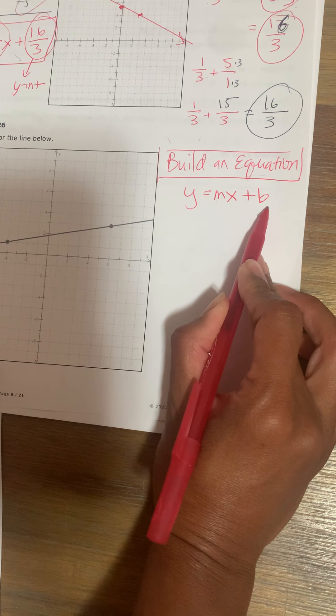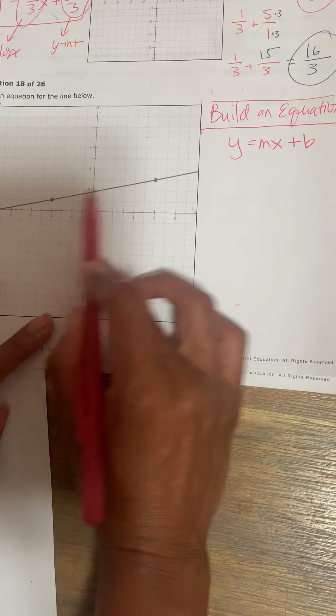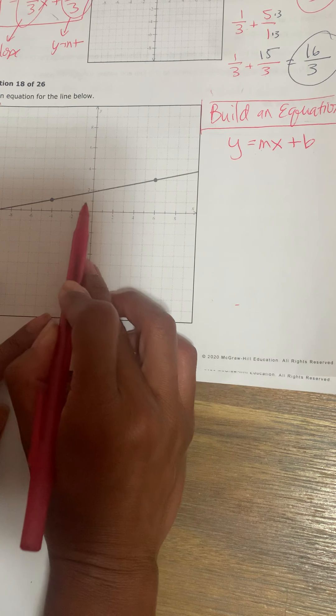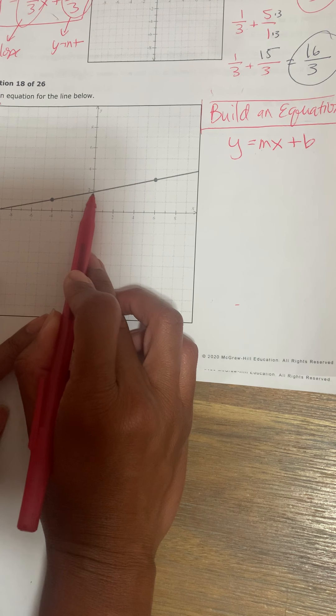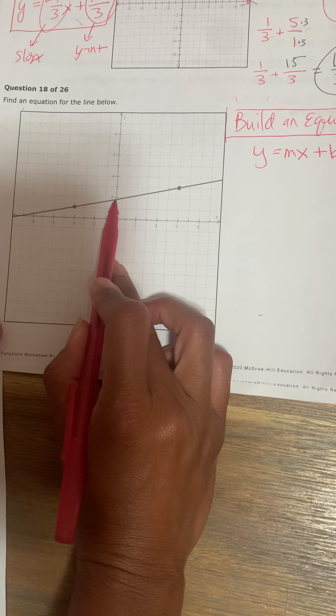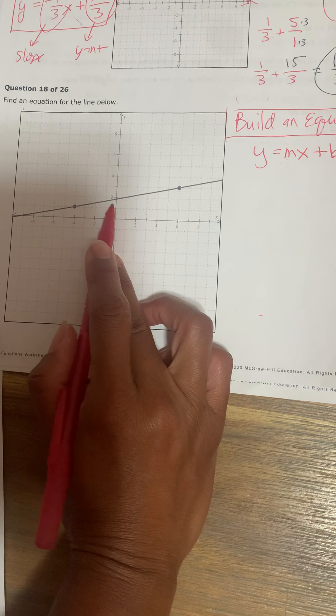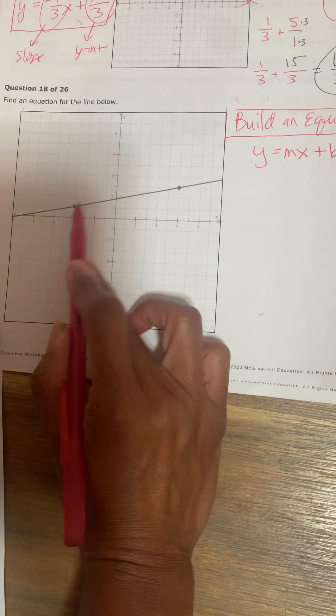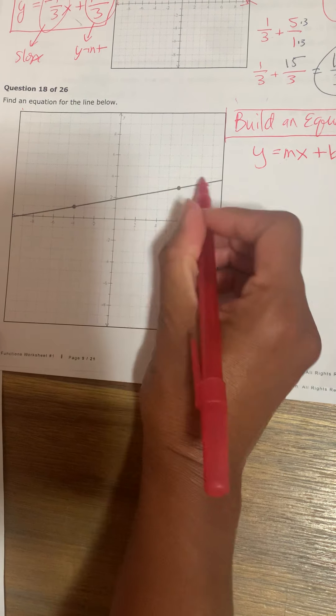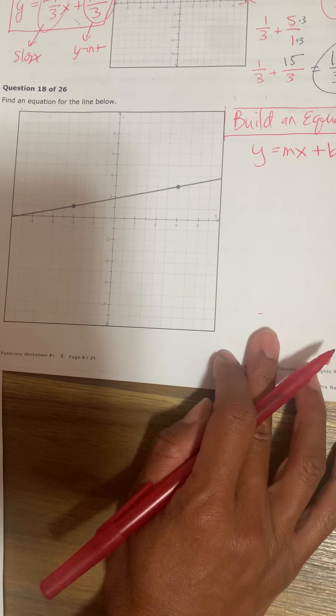So you need the slope and the y-intercept. If I look at this, I ask myself, do I know what the y-intercept is? Well, it looks like it's 1 point something. It's not really exact. So I wouldn't use that as the y-intercept because I can't tell exactly where it is. So with ALEKS, it gives you dots to say, use these dots. If I don't know what the y-intercept is, I'm going to use another method.